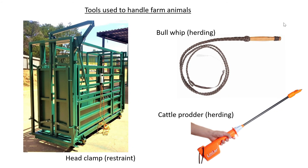We also have the head clamp, also for restraint. The animal enters the crush where it can be weighed. Once vaccinated or handled, the doors open and the animal moves through with its head. You close the clamp with the handle, literally clamping the head in place, restraining the animal even more. This allows you to clip hooves or do other procedures because the head and horns are out of the way. When done, you open it and the animal comes out.